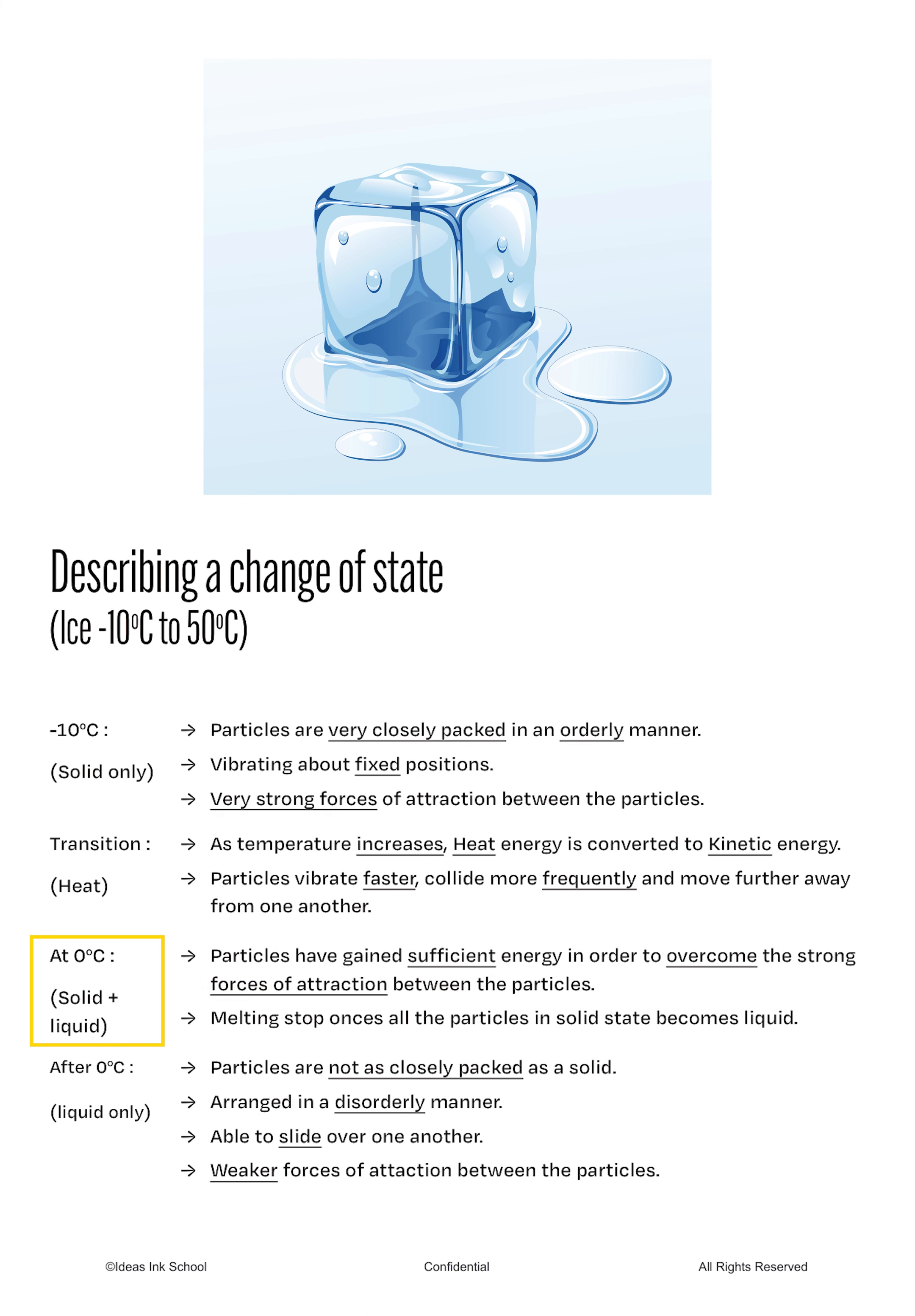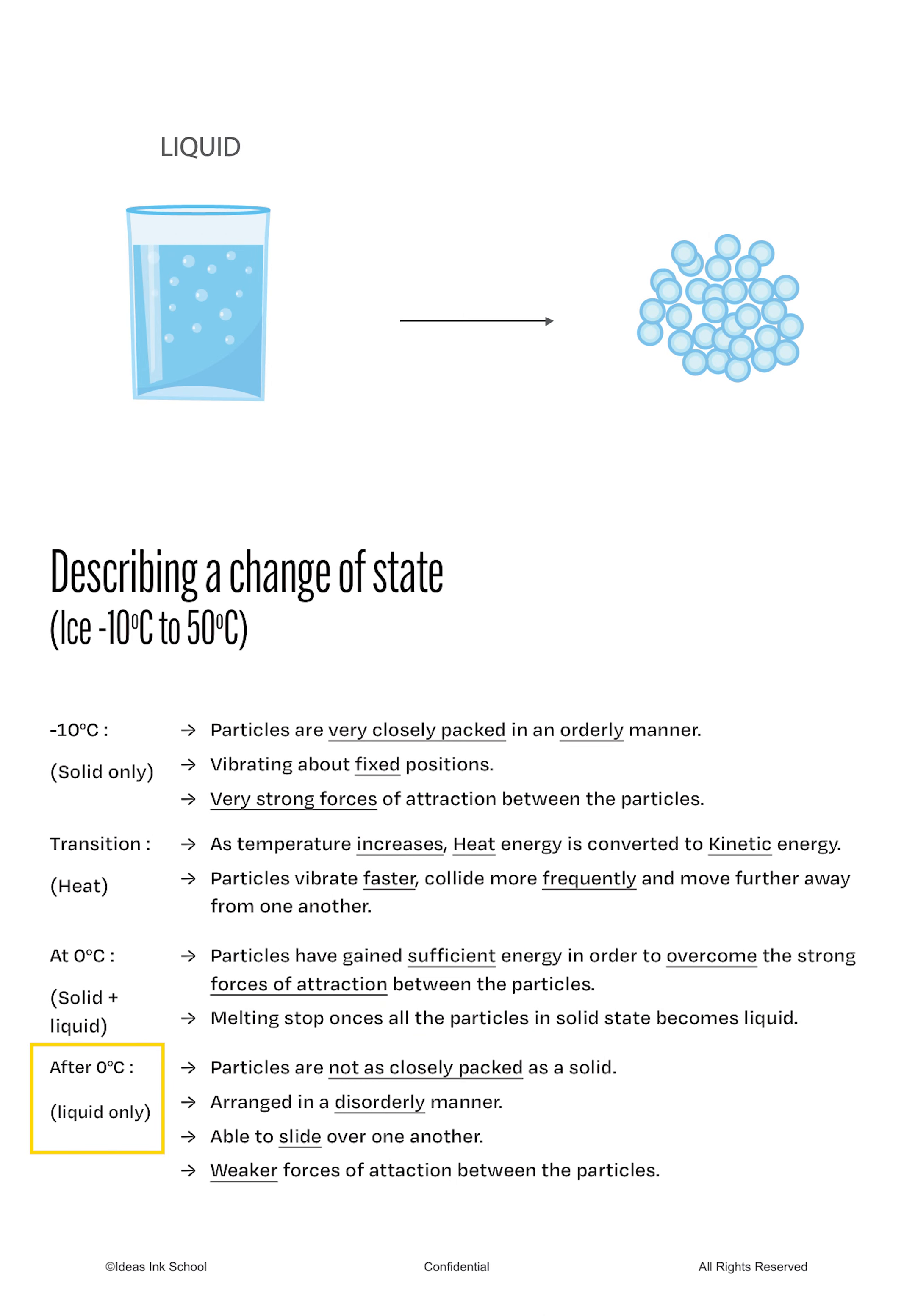During the melting process, both solid and liquid states are present. And melting will stop after all the solid have turned into liquid state. As temperature increases from 0 to 50°C, the particles are now behaving in a liquid state. They are not as closely packed as they once were as a solid. These particles are arranged in a disorderly manner and are able to slide over one another due to weaker forces of attraction.